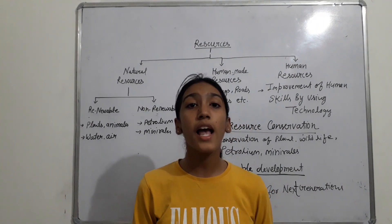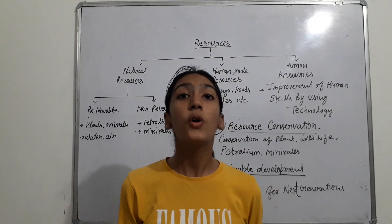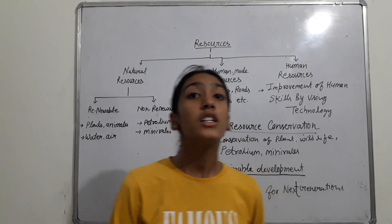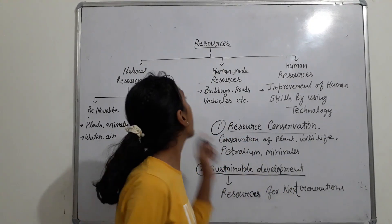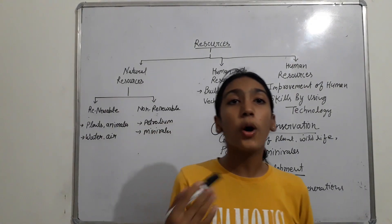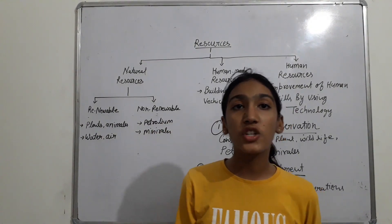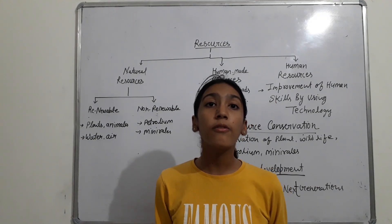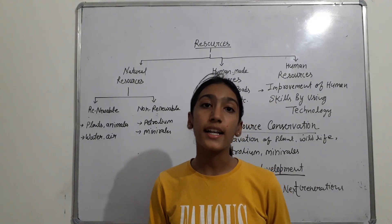Resources have three types: natural, human-made, and human resource. Natural resources are those resources which are obtained from nature, like plants, air, water, etc.